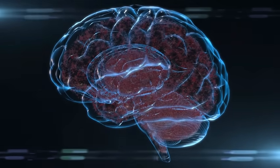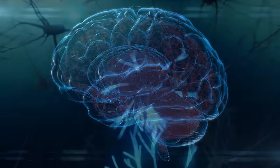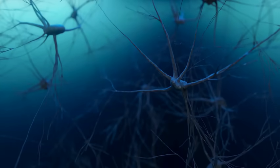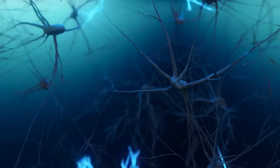Positive ions rush in, making the inside more positive. This creates a wave of electricity that shoots down the axon. It's like flipping a row of light switches one after the other. This action potential is how the neuron fires.